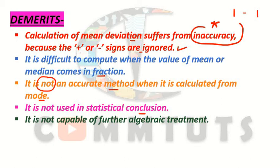And lastly, it is not capable of further algebraic treatment. This is very important — mean deviation is not capable of further algebraic treatment because the negative deviations are considered as positive. Since we ignore the plus or minus signs, if we use it further in algebraic treatment, we do not get accurate results. So we do not do further algebraic treatment with mean deviation.